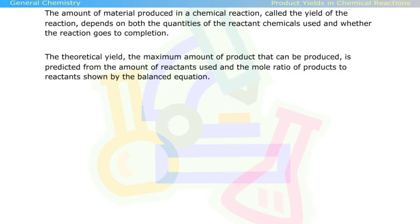The theoretical yield, the maximum amount of product that can be produced, is predicted from the amount of reactants used and the mole ratio of products to reactants shown by the balanced equation.